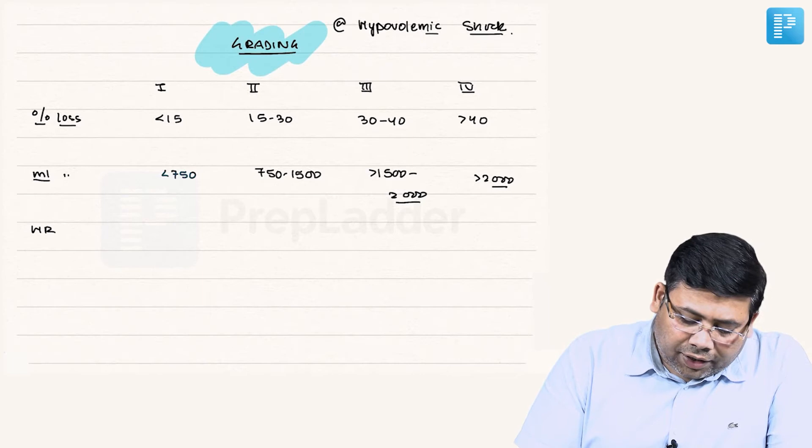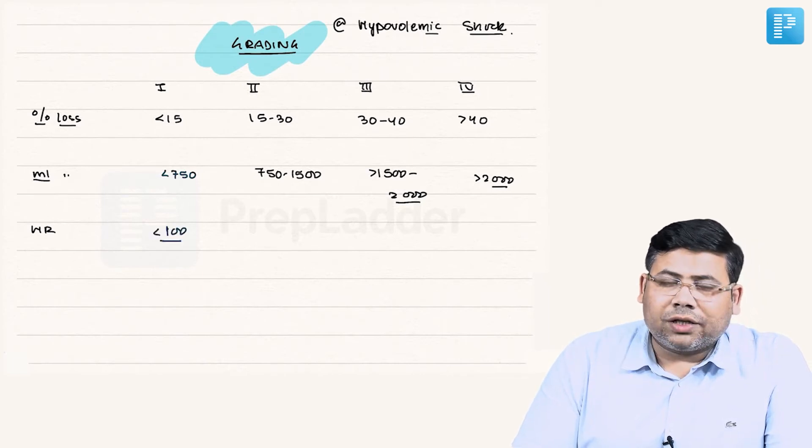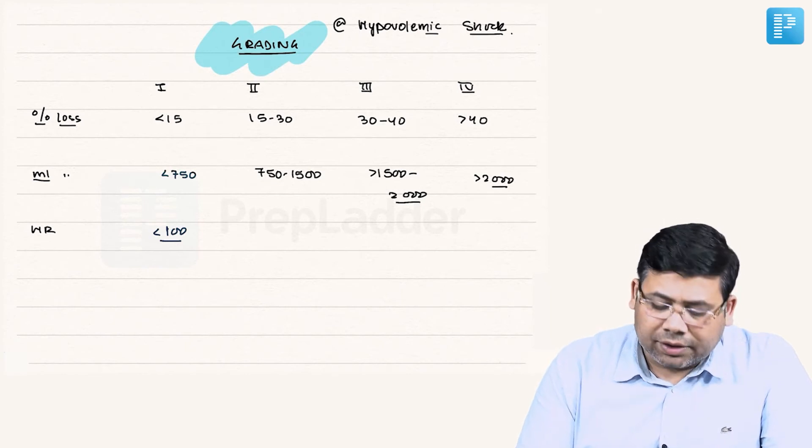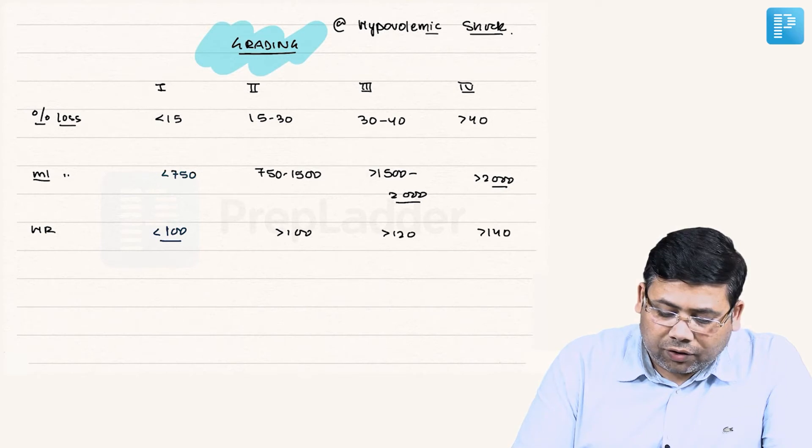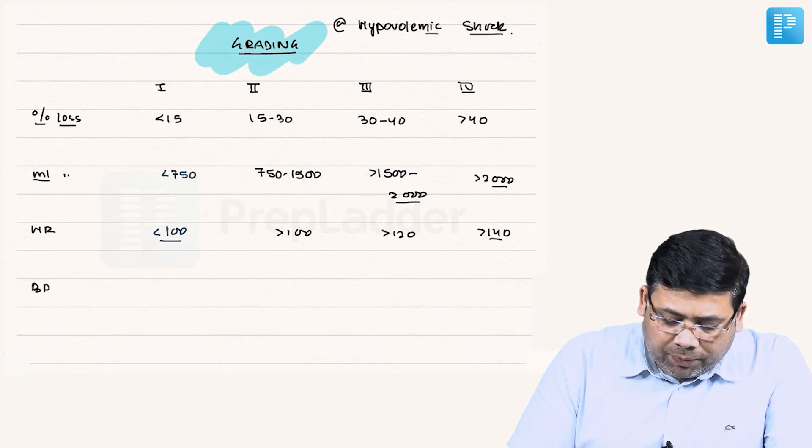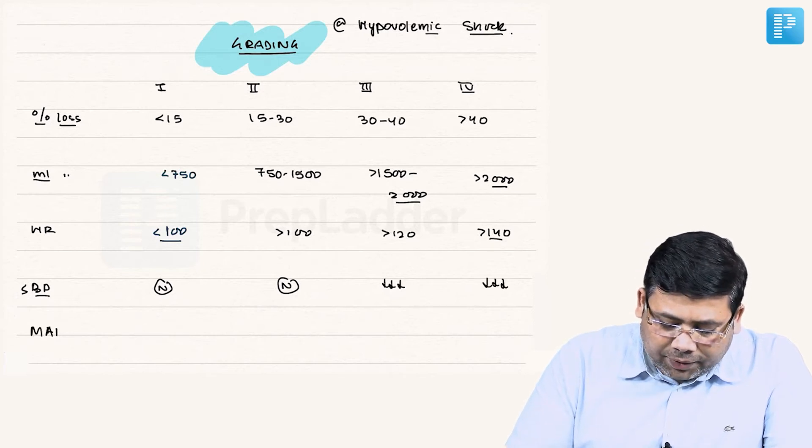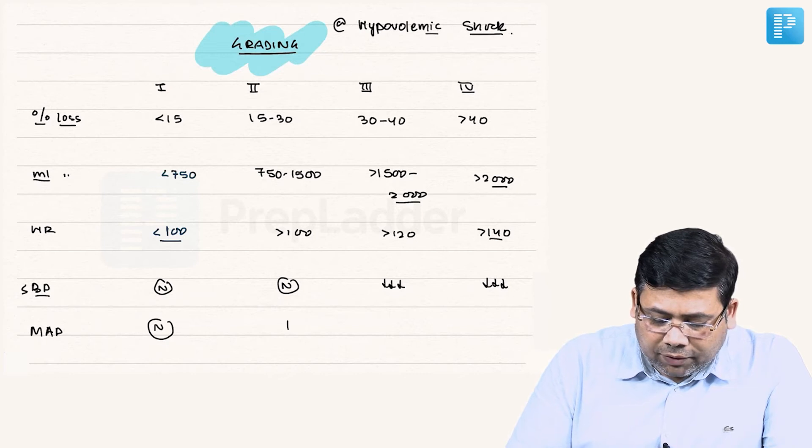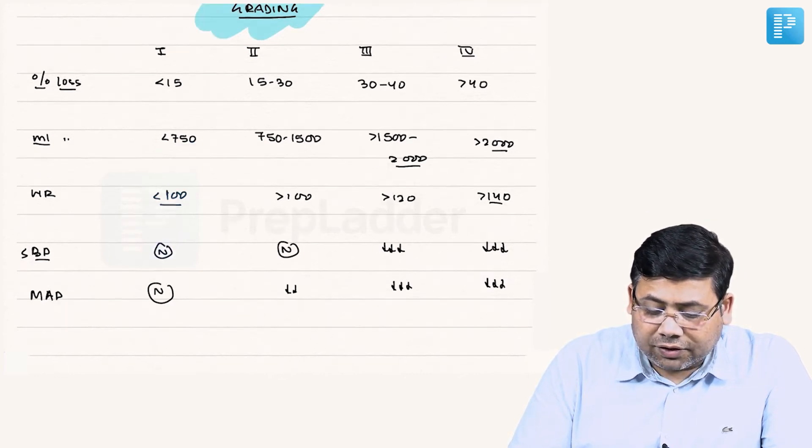When we talk about heart rate, it is less than 100 for grade 1, which is a compensated normal patient. Grade 2 is more than 100, grade 3 is more than 120, and grade 4 is more than 140. When we talk about BP, systolic BP is normal for grade 1, normal for grade 2, and it falls from grade 3 onwards. Mean arterial pressure is normal for grade 1 but starts to fall from grade 2 onwards.